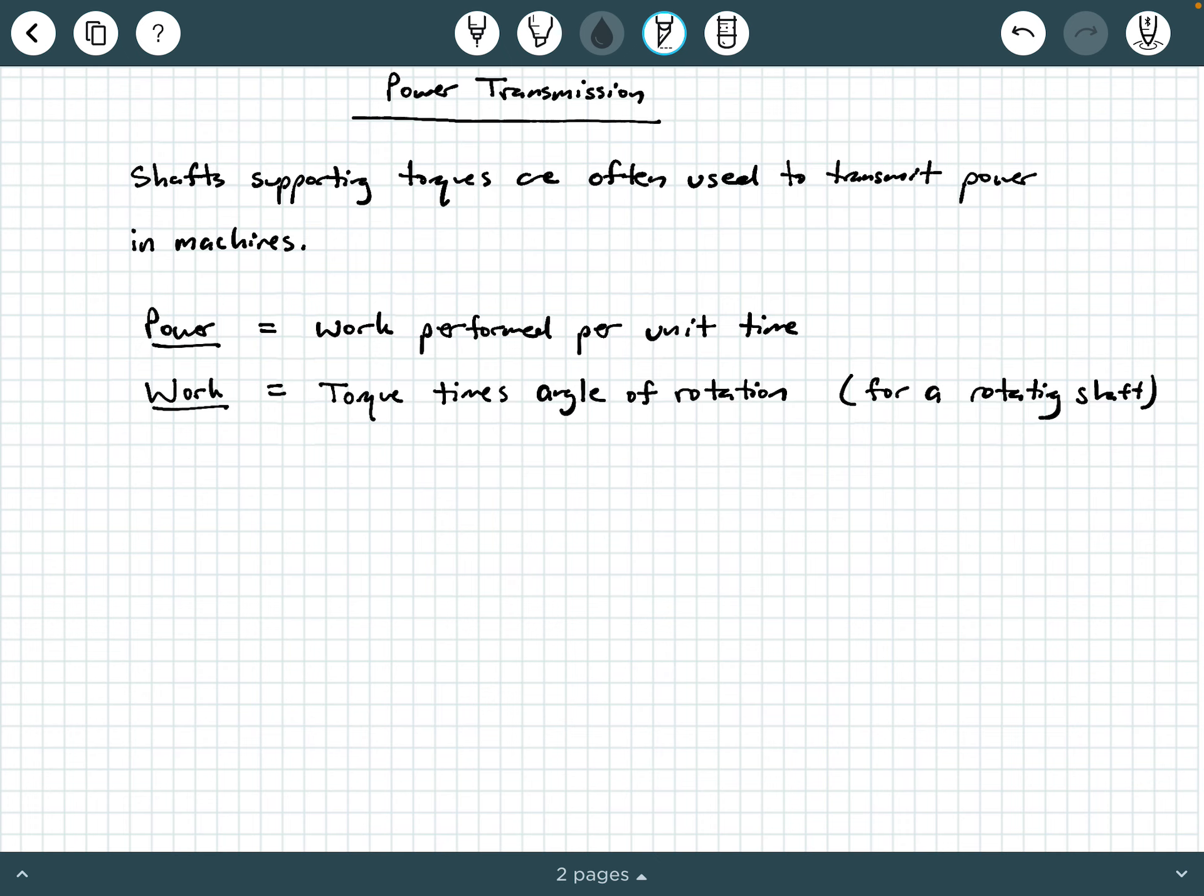In this application, we're thinking about work done by a rotating shaft. So that's going to be equal to torque times an angle of rotation. Now, does that make sense? Well, yeah. When we talk about work performed by a force, we look at force times a displacement.